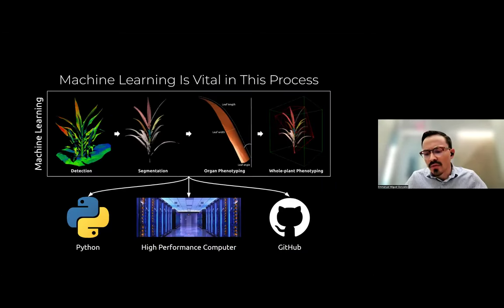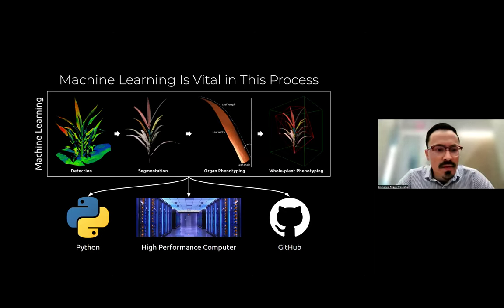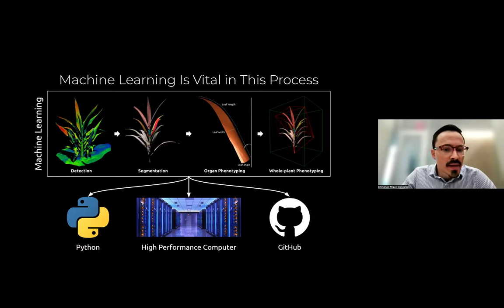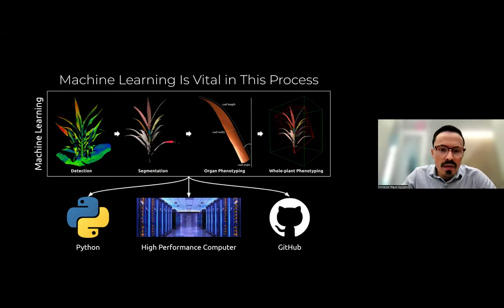Let's take a closer look at a case study showing how machine learning might be used in this process. In a typical processing phase, we might detect a plant, then segment that plant — removing the soil and leaving only the plant itself. We might also want to segment individual leaves, and once we have individual subjects, we might want to extract some phenotypes.